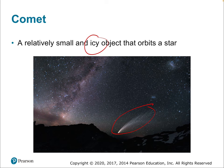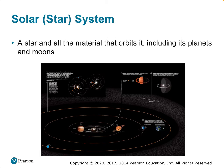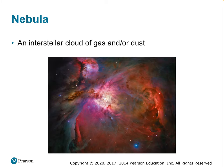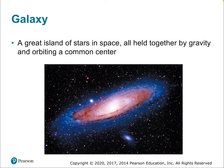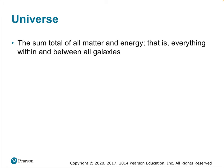A star at the center, planets orbiting around it, moons around those planets, and leftover asteroids and comets together form a solar system or star system. Nebulae are interstellar clouds of gas or dust, important to star formation. A galaxy is composed of hundreds of billions of stars and the nebulae between them. The universe is the sum total of everything — all the galaxies, plus more mysterious things like dark matter and dark energy.